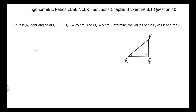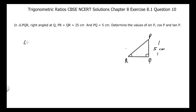This is CBSE NCERT solutions chapter 8, exercise 8.1, question number 10. The problem is: in triangle PQR, right-angled at Q, it is given that PR plus QR is 25 centimeters and PQ is 5 centimeters. We need to determine the values of sine P, cosine P, and tangent P.